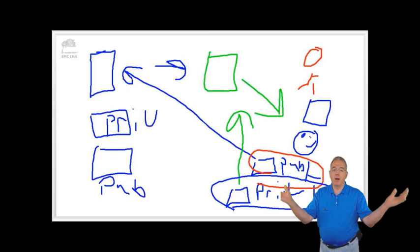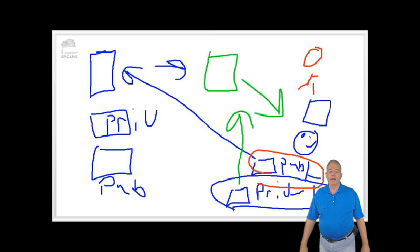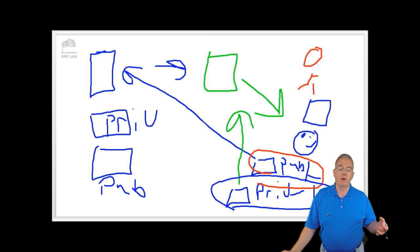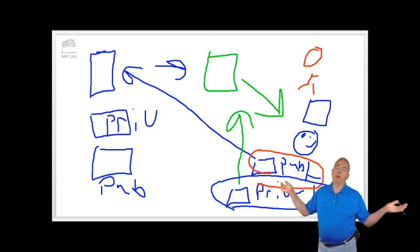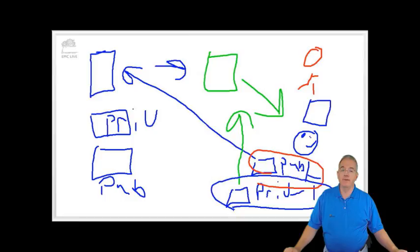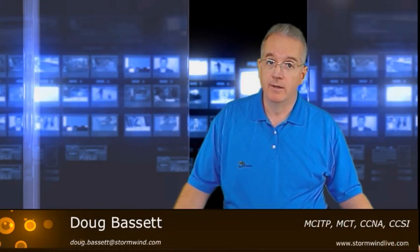So you give your public key to everybody. I've seen people that include it as their signature or as part of their signature in their email. You give everybody the public key. The more people that have a copy of your public key, the more people can encrypt to you. But you do not share your private key with anyone. You don't do that.